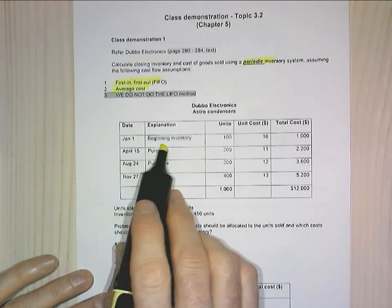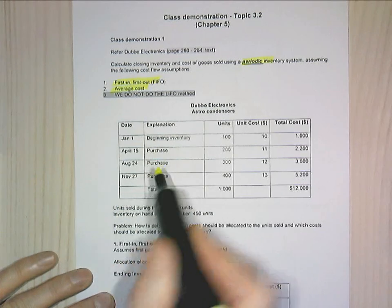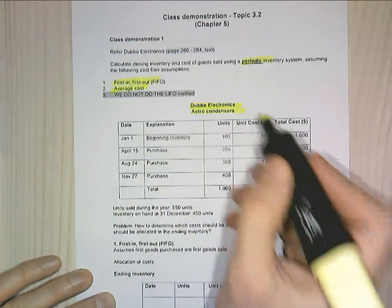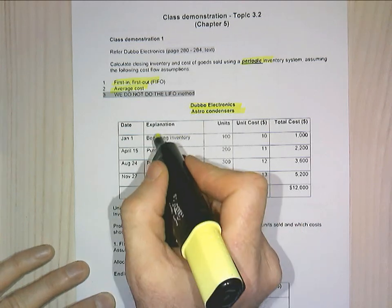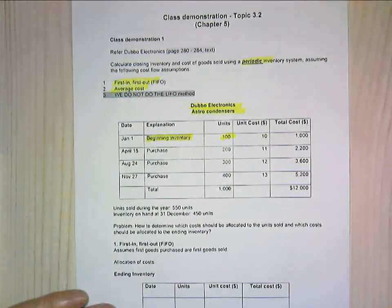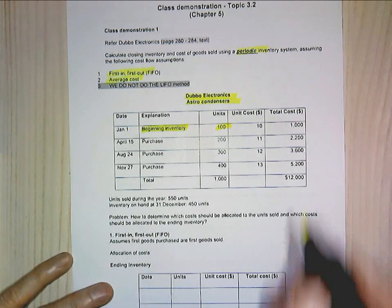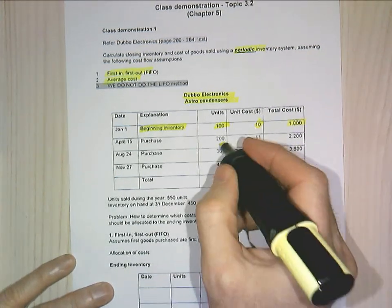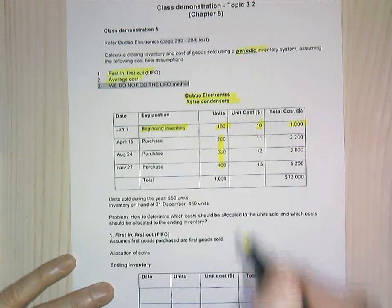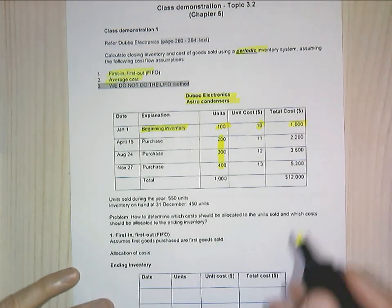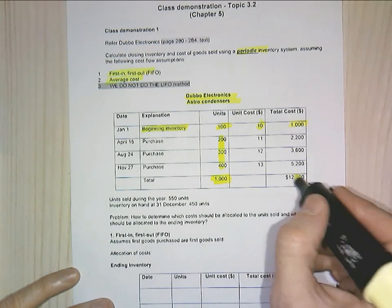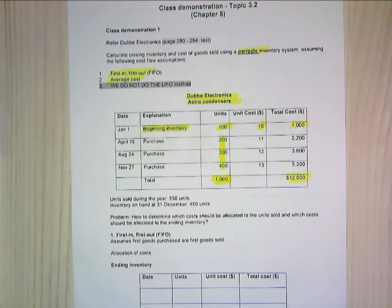We've been given some information telling us that Dubbo Electronics and Astro Condensers have a beginning inventory of 100 units, giving a value of $1,000, so the unit cost is $10. We do some more purchases throughout the period, and this is the periodic system — we've got 1,000 units available for sale at a cost of $12,000.